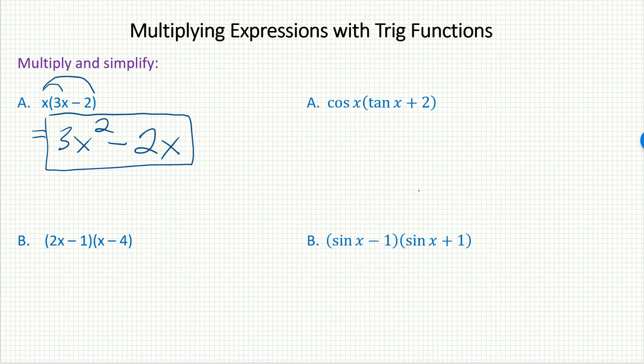Well, similarly, with trig functions, if I see something in front of a parentheses like this being multiplied, I can also use the distributive property. Here I would have cosine x tangent x. That's how we write cosine times tangent. Plus, and then cosine x times 2 would be 2 cosine x.